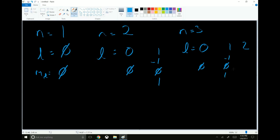And if l is equal to two, then m sub l can be negative two, negative one, zero, one, or two. And as you go up in n, you get more l available, and with each l, you get more m sub l available. So these are just the different regions of space.